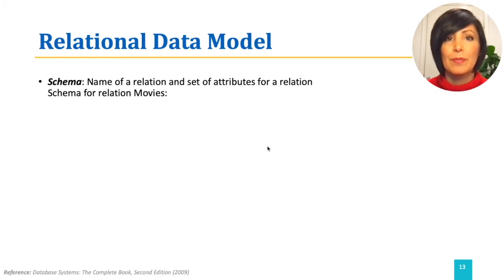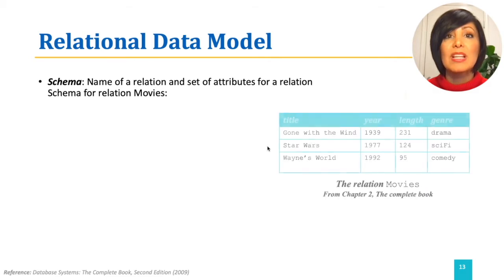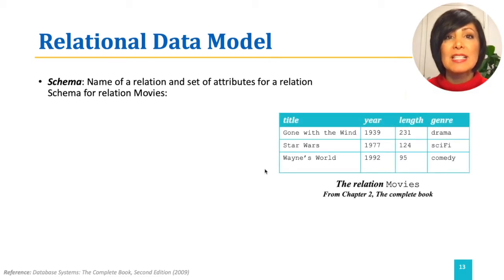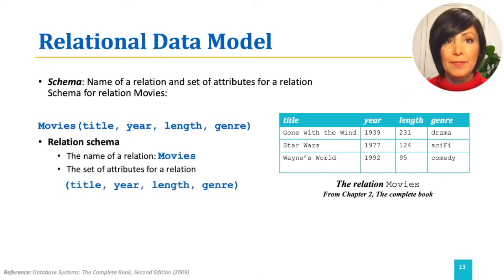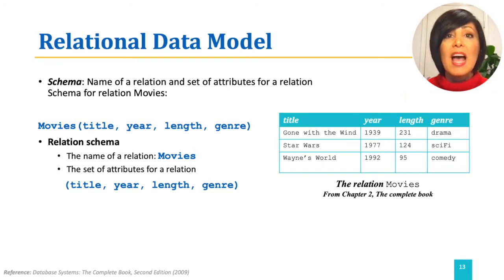For example, the schema for relation movies shown in the table here can be defined as movies, title, year, length, and genre. Note that this schema includes the name of the relation, which is movies, and title, year, length, and genre, which are the attributes defining the columns of this table, and therefore the values that should be contained in each full row.